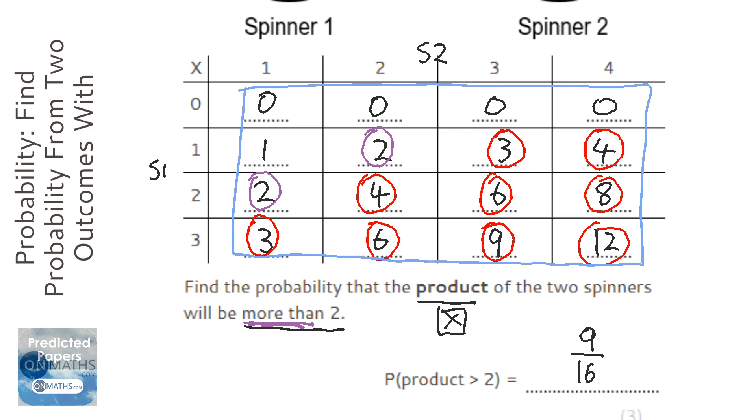Another really common mistake is this bottom number here. A lot of students would put that as, was it five? No, seven. They put it as seven because it's all the remaining numbers. No, that bottom number is always the total amount of numbers.